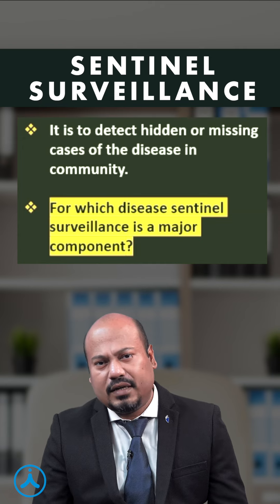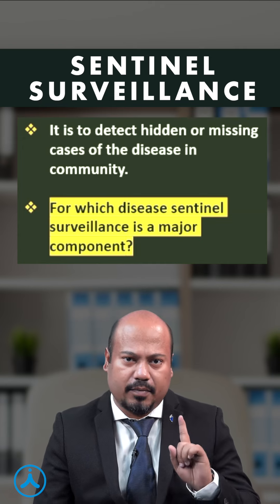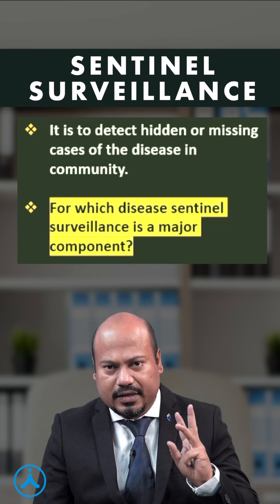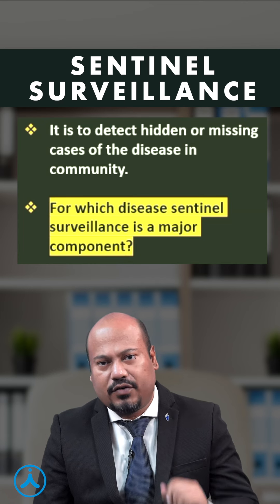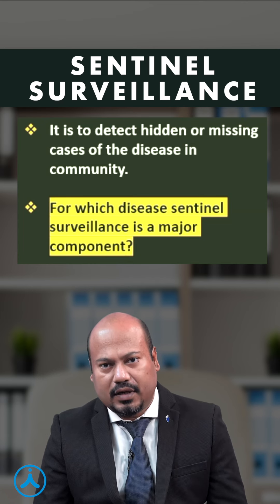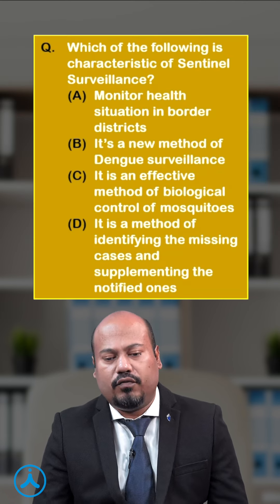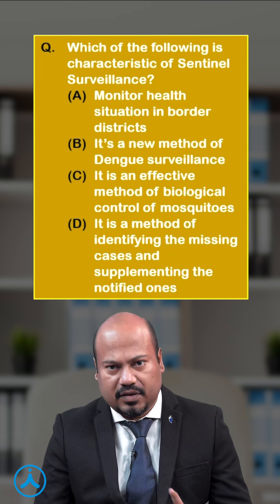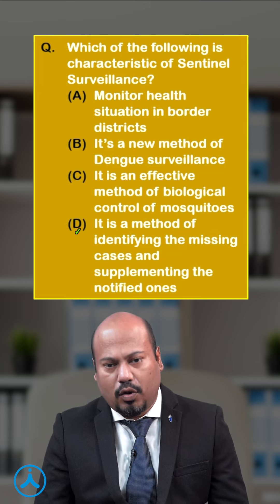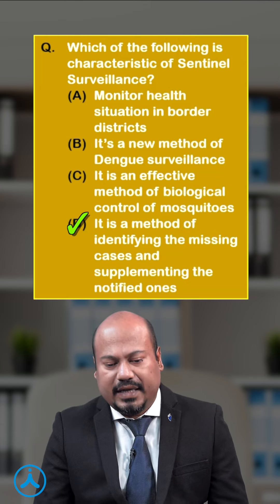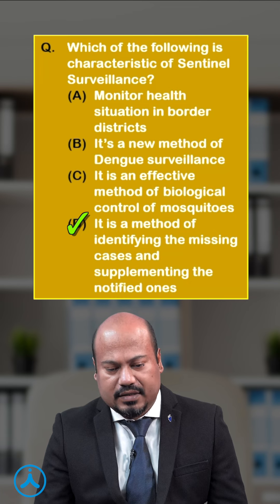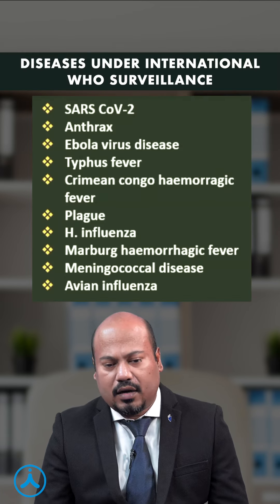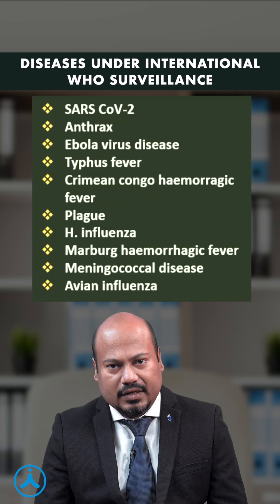What are the sentinel sites for HIV? They will be the blood banks, the STD clinics, and the antenatal clinics, which will give the HIV trend in that particular community. Look at this question: which of the following is characteristic of sentinel surveillance? This is a previous year question — the answer is Option D: it is a method of identifying the missing cases and supplementing the notified ones.